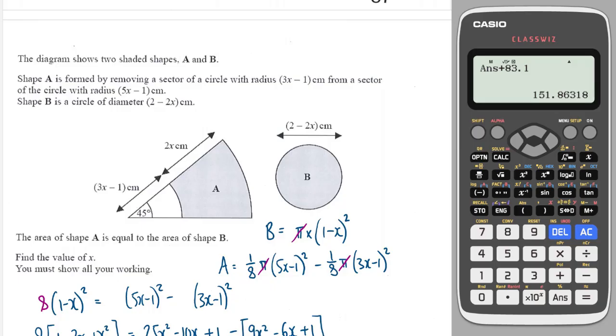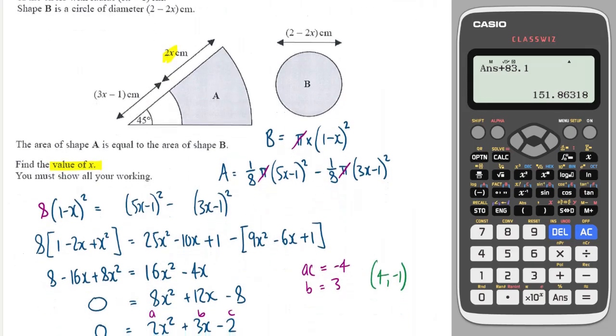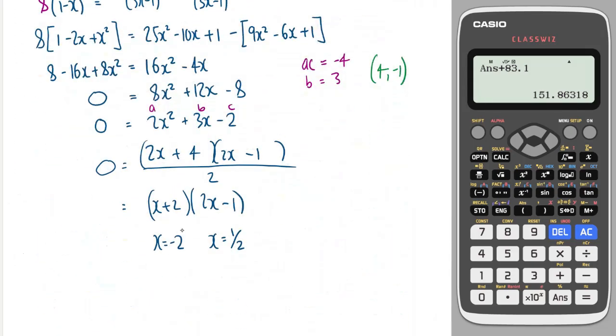But it does say find the value singular of x. And that's because x is a distance, so therefore it can't be negative. So we must reject this one and accept this one. And we're done.